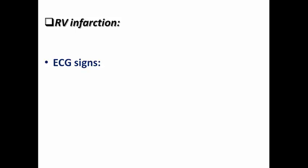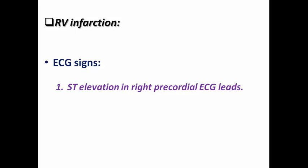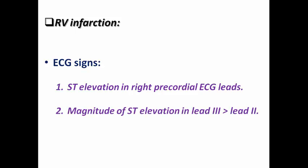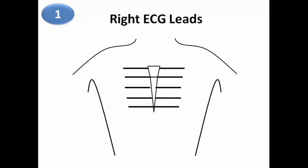Let's discuss the ECG signs for RV infarction. There are three famous ECG signs: the first, which is the gold standard, is ST elevation in the right precordial ECG leads; the second is the magnitude of ST elevation in lead 3 greater than in lead 2; and the third is ST elevation in V1 more than 2 mm.